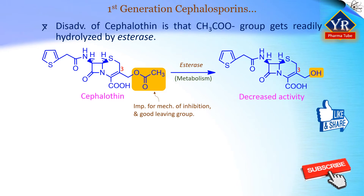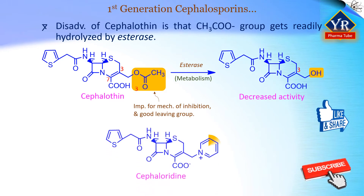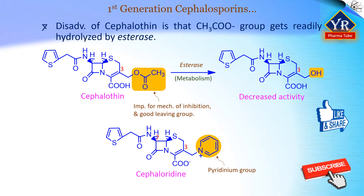Replacing the ester group with a metabolically stable pyridinium group gives cephaloridine. The pyridine can still act as a good leaving group for the inhibition mechanism, but it is not cleaved by esterase enzymes. Cephaloridine exists as a zwitterion, having both positive and negative ions on the same molecule. It is soluble in water, but like most first-generation cephalosporins, it is poorly absorbed through the gut wall and has to be injected.